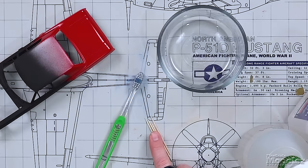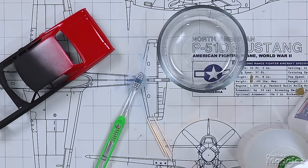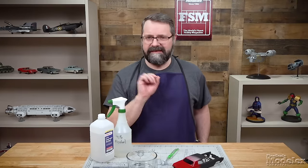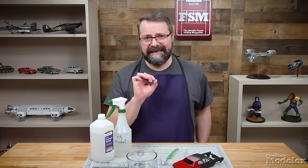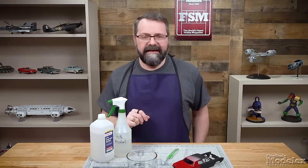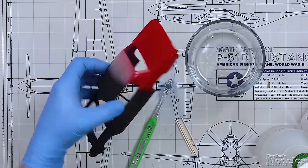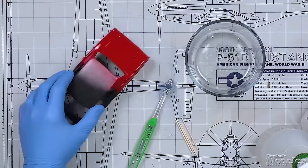You're going to need toothpicks because there is inevitably going to be a space where there's paint that you're going to need to get at and scrape, and then of course you need the part that you're going to be taking the paint off of.